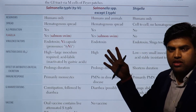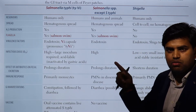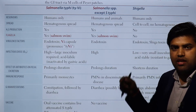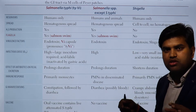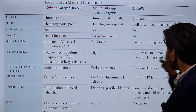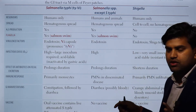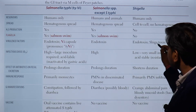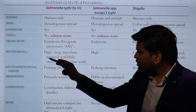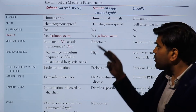Shigella species have both endotoxin and exotoxin. The exotoxin is an enterotoxin also called Shiga toxin. We previously discussed the Shiga toxin mechanism under exotoxins — it is a protein synthesis inhibitor, inhibiting elongation factor, similar to Pseudomonas, diphtheria, and enterohemorrhagic E. coli. So Shigella has both endotoxin and exotoxin activity.